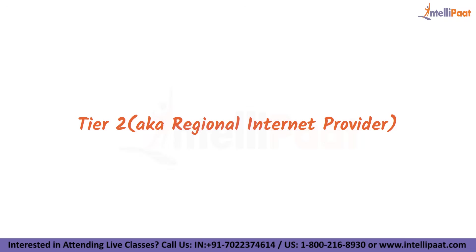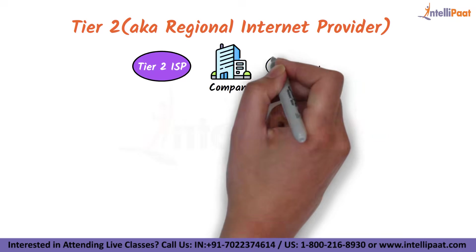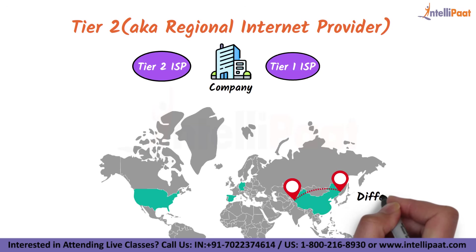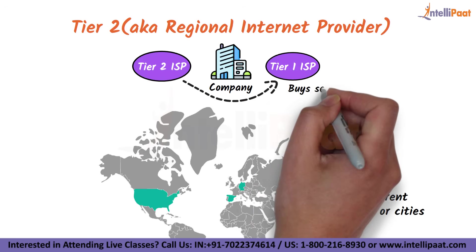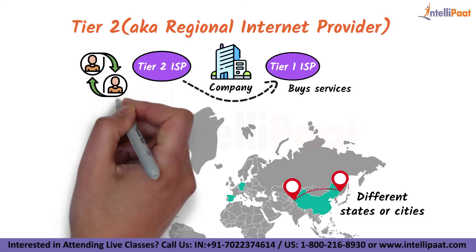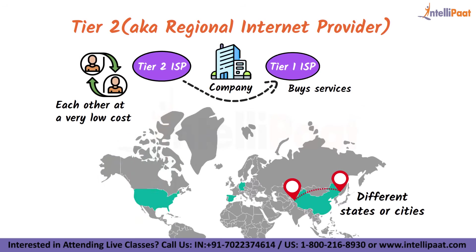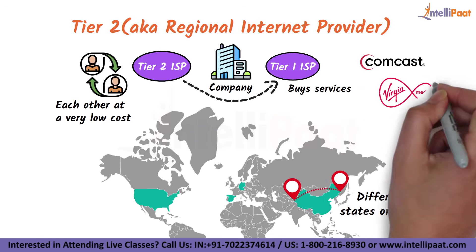Tier 2, also known as Regional Internet Provider, is smaller than Tier 1. It works to provide internet connections to different states or cities within a country, buying services from Tier 1. Tier 2 ISPs peer with each other at very low or no cost to expand their global reach — companies such as Comcast and Virgin Media.